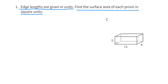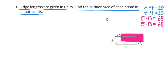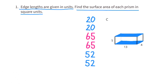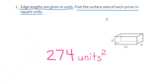Prism C. The two sides with dimensions 5 by 4 each have a surface area of 20 square units. The two sides with dimensions 5 by 13 each have a surface area of 65 square units. The two sides with dimensions 4 by 13 each have a surface area of 52 square units. Adding up the surface areas for each side, the surface area for Prism C is 274 square units.